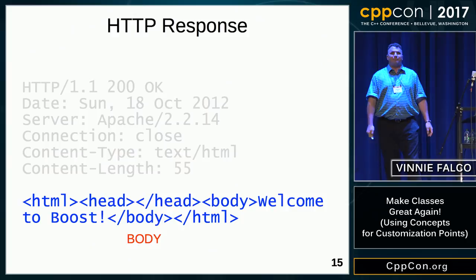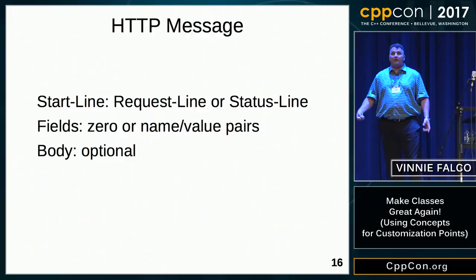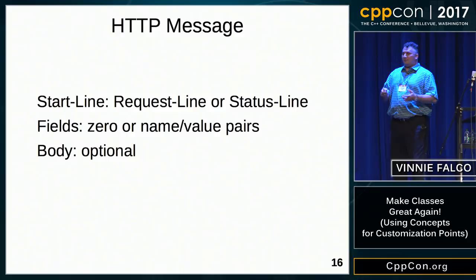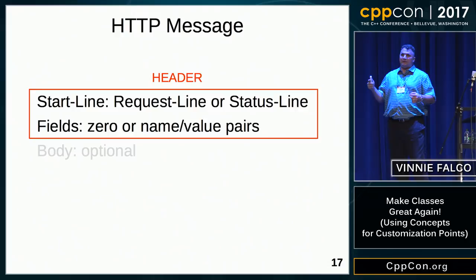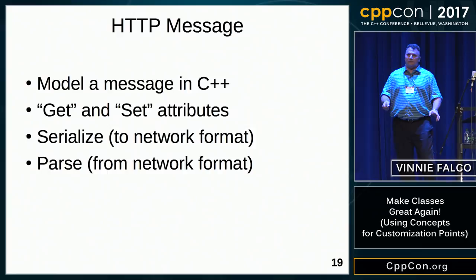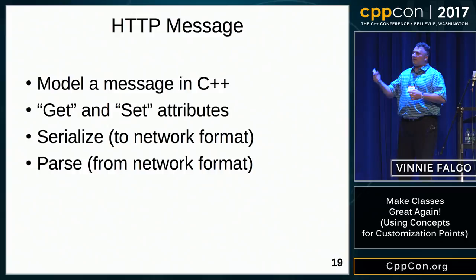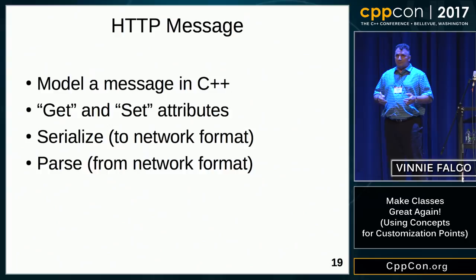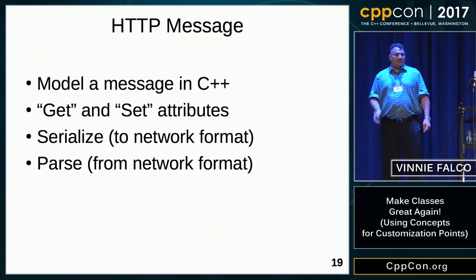The object-oriented-minded folks are probably thinking that requests and responses are just special cases of a more general concept called a message — and they'd be right. An HTTP message consists of the start line (slightly different for requests vs. responses), the fields (name-value pairs), and an optional body. The start line and fields are collectively referred to as the header. We want to model these HTTP messages in C++, inspect and change their attributes, serialize them into network format, and parse bytes back into the in-memory representation.